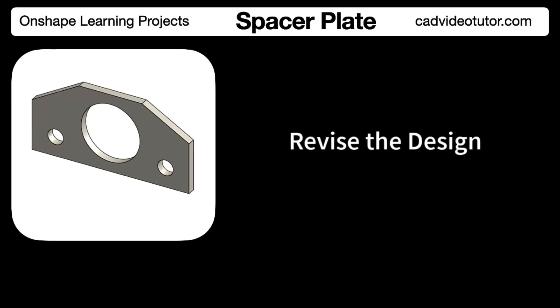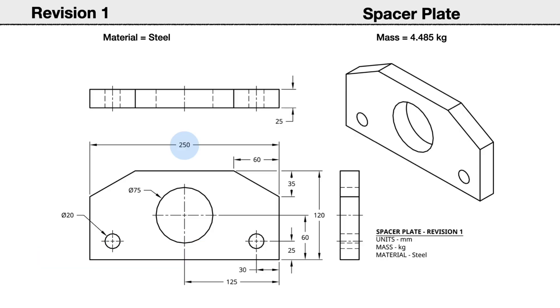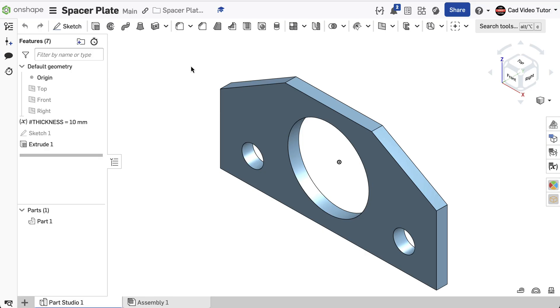In this segment, we'll apply a revision to our part called a spacer plate. First, we'll identify changes by reviewing the revised drawing. The length has been increased to 250 millimeters, the height has been increased to 120 millimeters, and the thickness is now 25 millimeters. Please note, all other features should remain in their current size and relative locations.